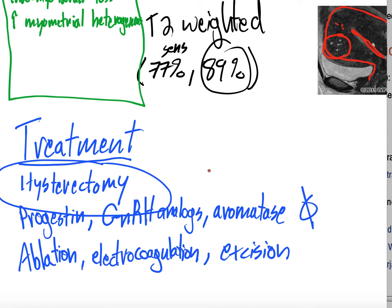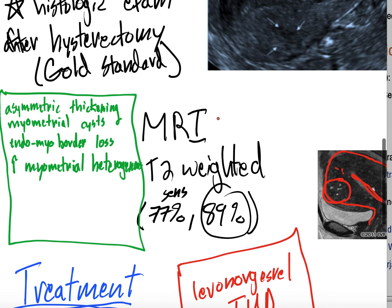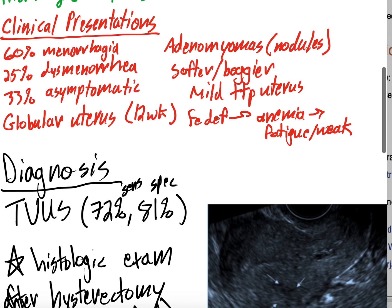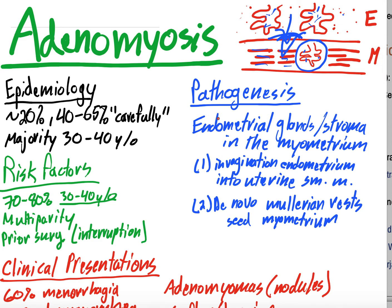If you get a board question, levonorgestrel-containing IUDs have been found to be the most effective medication for adenomyosis. Before going to hysterectomy or conservative surgery, a levonorgestrel IUD is probably worth attempting. So we've covered treatment, diagnosis — gold standard hysterectomy, least invasive being transvaginal ultrasound or MRI — as well as clinical presentation, risk factors, pathogenesis, and epidemiology. Thanks for watching; leave any questions below, subscribe for more, and have a good one.